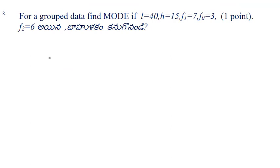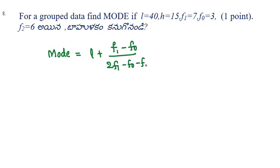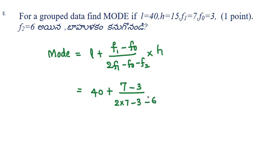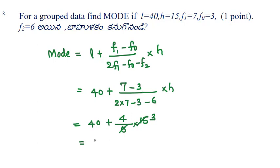Next problem: find the mode when the values are given. Mode = l + [(f1 − f0) / (2f1 − f0 − f2)] × h. Substituting: 40 + [(7−3) / (2×7 − 3 − 3)] × 15 = 40 + [4 / (14 − 3 − 3)] × 15 = 40 + [4/8] × 15 = 40 + 12 = 52. So mode equals 52.